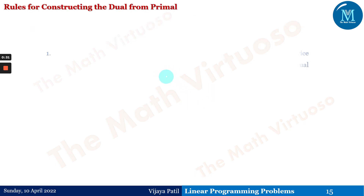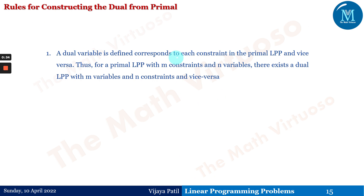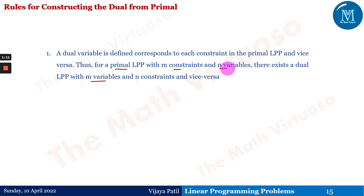Rule one: a dual variable is defined corresponding to each constraint in the primal LPP, and vice versa. Thus, for a primal LPP with m constraints and n variables, there exists a dual LPP with m variables and n constraints, and vice versa. So the constraints from the primal become the number of variables in the dual, and the number of variables from the primal becomes the number of constraints in the dual.